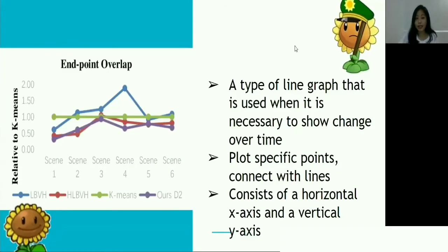Hi, I'm going to present what is a broken line graph. A broken line graph is a variation of a line graph. It is one way to show the relationship between two variables, and this type of line graph is used when it is necessary to show change over time and it plots specific points and connects these points with lines.